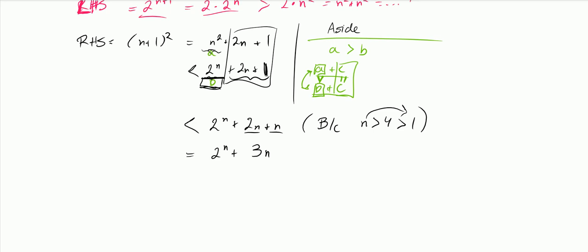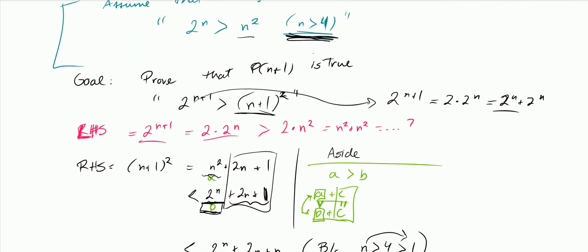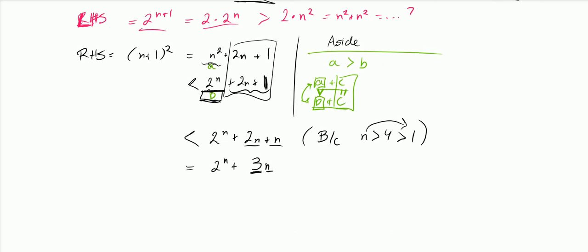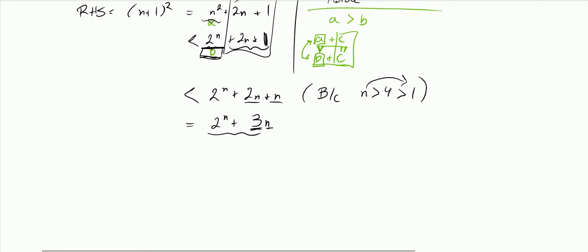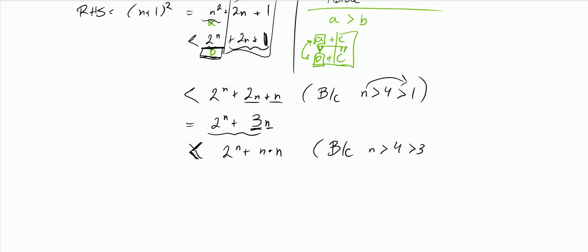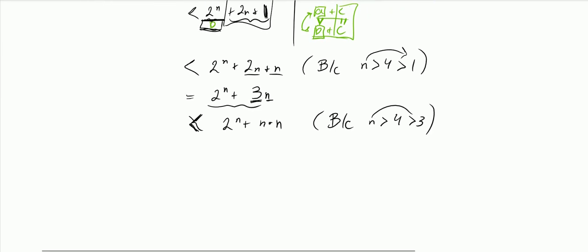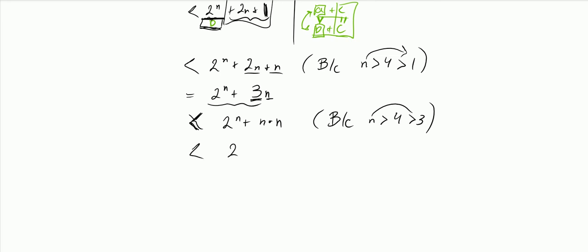Now I have a constant 3 in the expression. I know n is greater than 4, so necessarily n is greater than 3. Therefore I can replace 3 times n with n times n: 2 to the n plus 3n is less than 2 to the n plus n times n, which equals 2 to the n plus n squared.